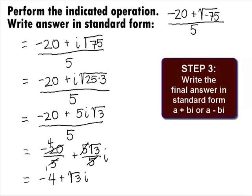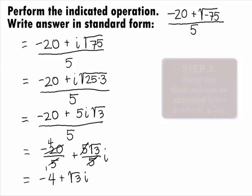In Step 3, we want to write our final answer in standard form. So, our final answer will be negative 4 plus square root of 3i.